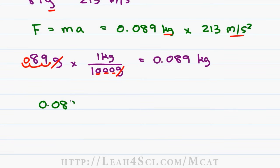0.089 times 213 looks complicated so let's start by simplifying. 89 is close to 90 so we'll change this number to 0.090. 213 is very close to 200 so we'll round that down.